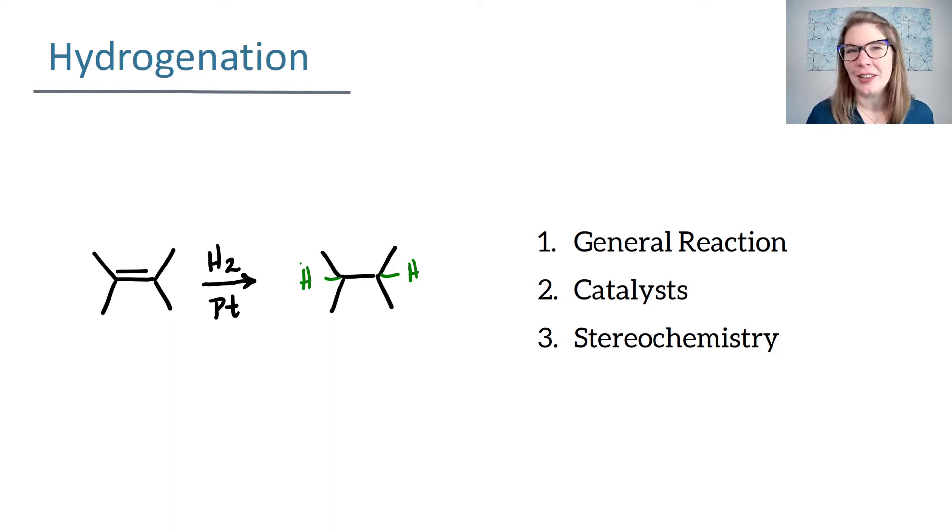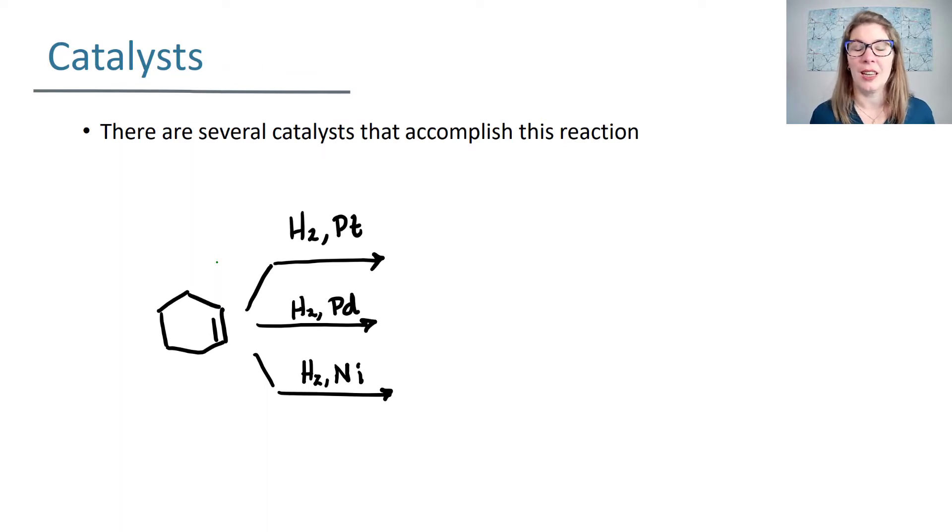Let's look at the catalyst that you use in order to make this reaction work. One of the things that you might get confused about is seeing multiple different catalysts that can be used. So if you used palladium, platinum, or nickel, all of these are going to work with the hydrogenation reaction to remove that alkene by adding hydrogen across that pi bond.